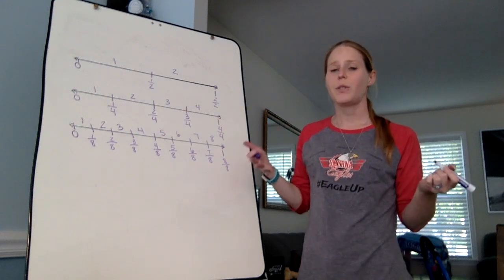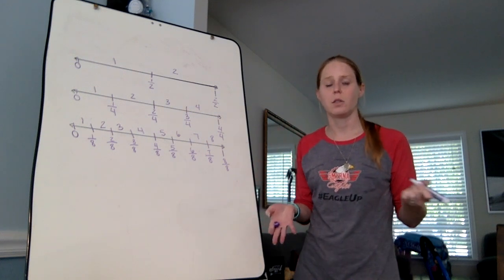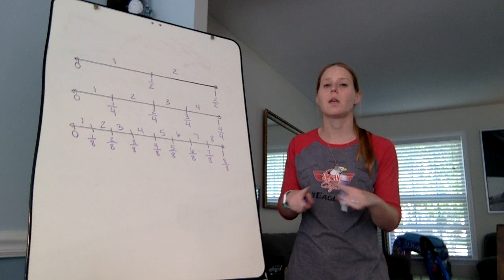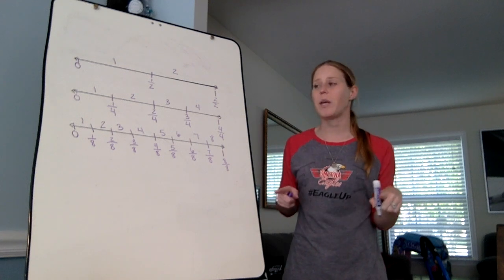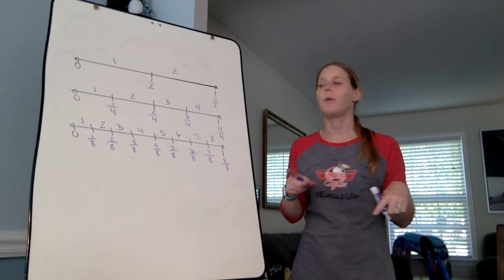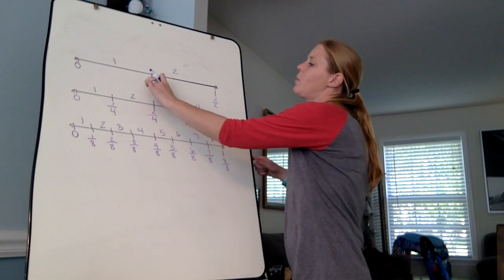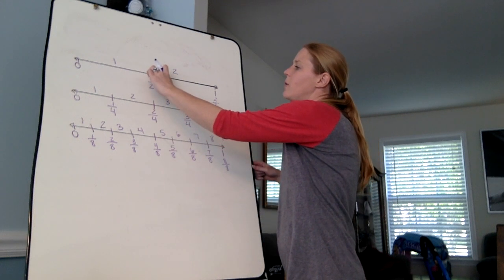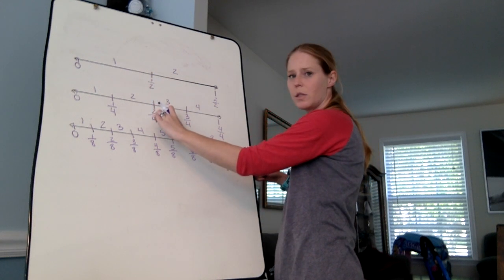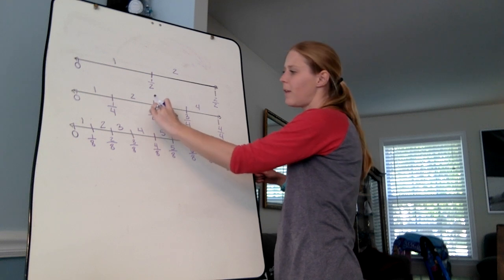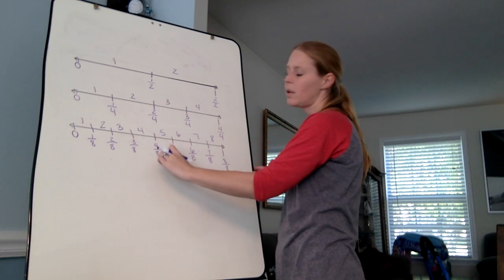We can also use this to help us figure out some equivalent fractions. And equivalent fractions are those fractions that take up the same amount of space. Let me give you an example. If I look right here at one half, if I go straight down, I run into two fourths. If I keep going straight down, I run into four eighths.